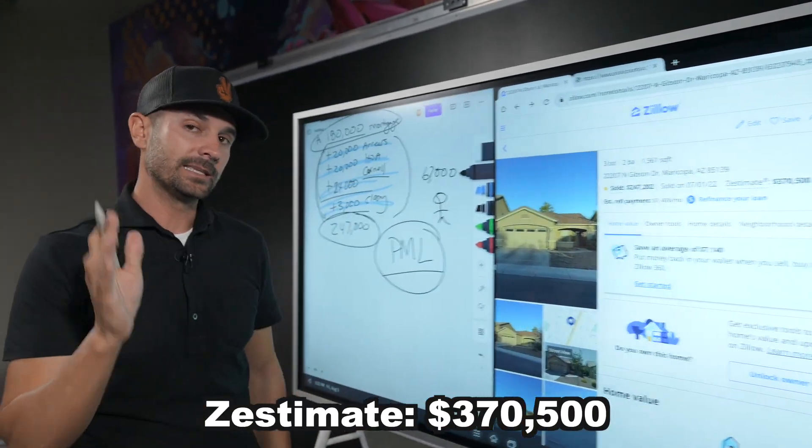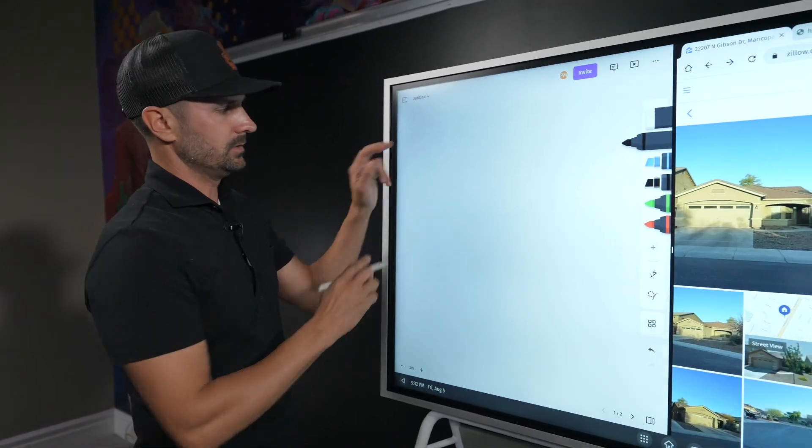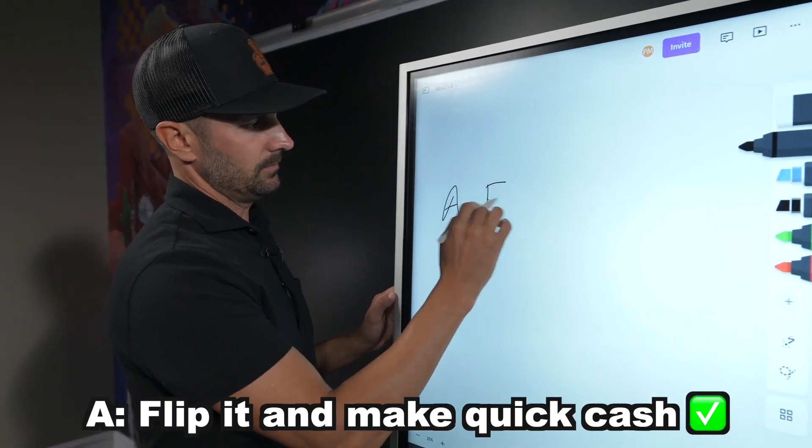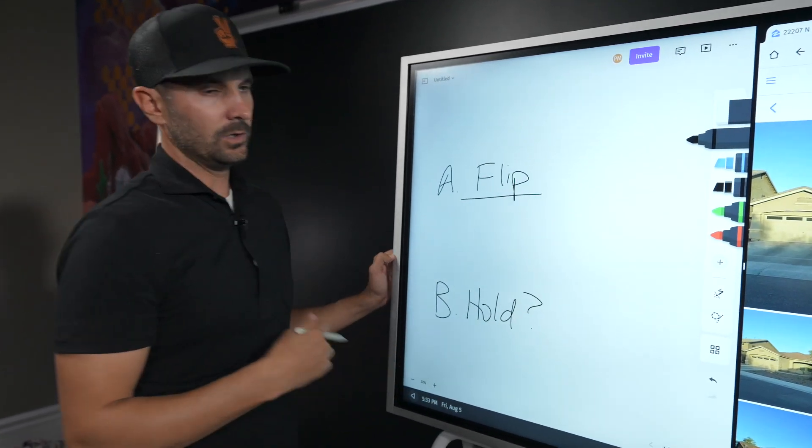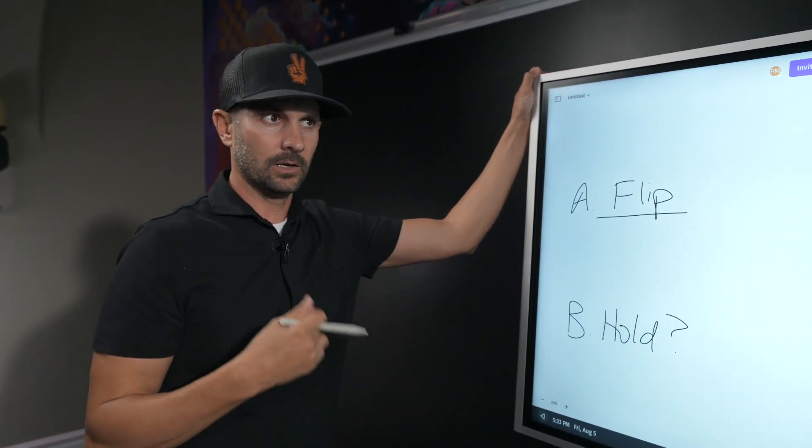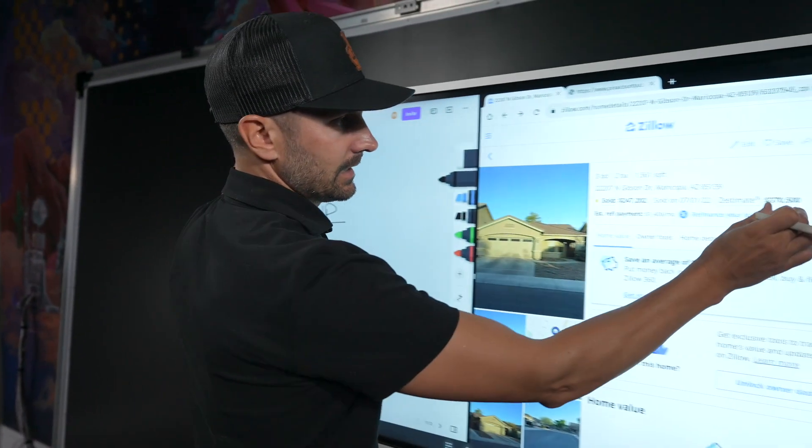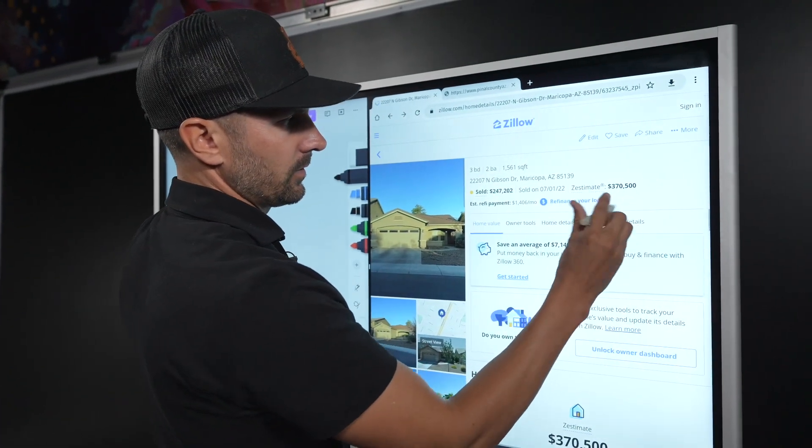And the Zestimate is $370k. So the question you got to ask yourself is, do you flip it or do you hold it? This is always a common question. When you do a sub-two deal like this, if I flip it, you can see that Zillow says they think it's worth $370k.